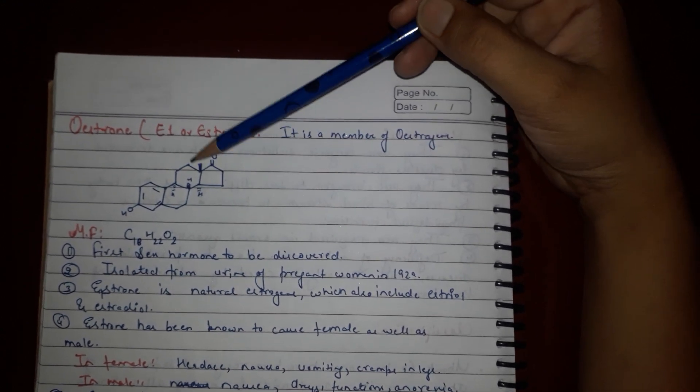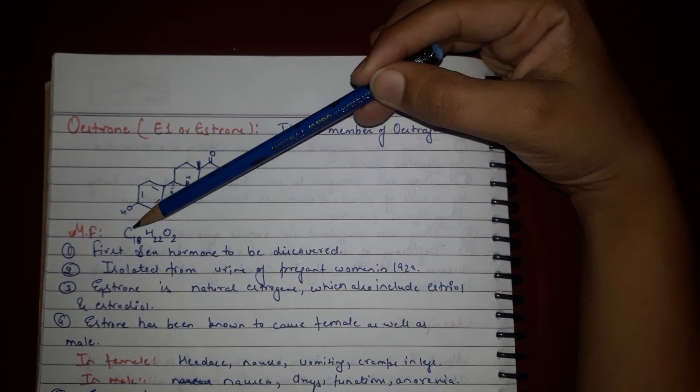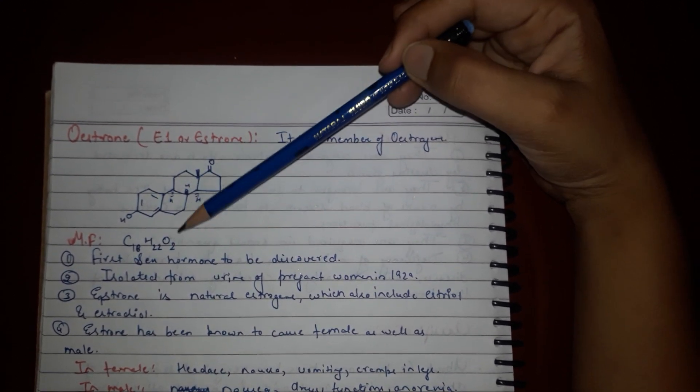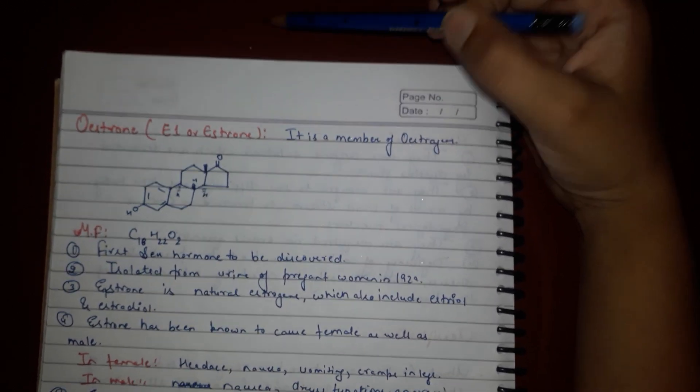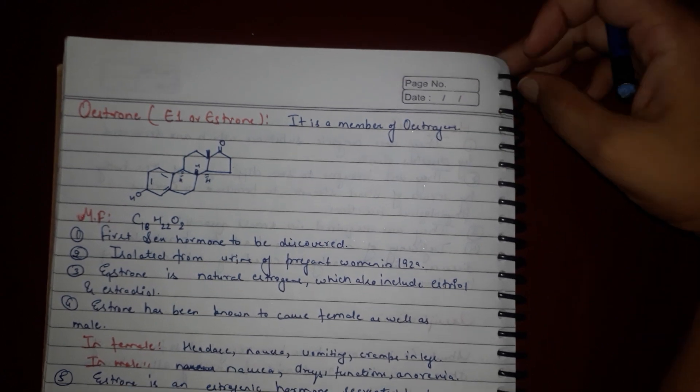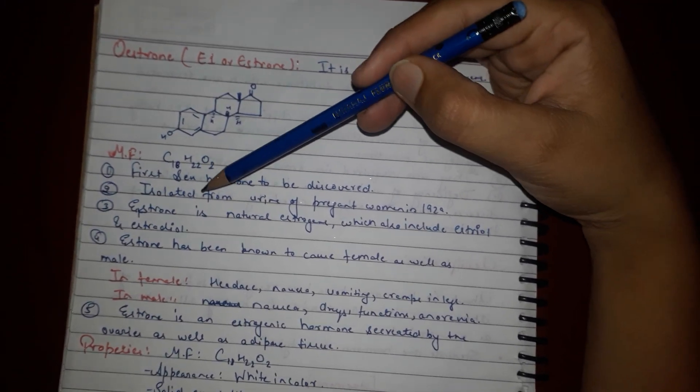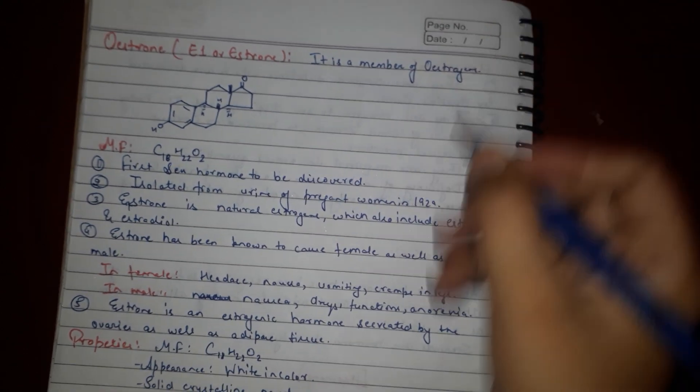Generally for constitution we will discuss these points of estrogen structure. First, molecular formula: C18H22O2, one oxygen is keto and one is OH. Estrogen was the first sex hormone which was discovered. It was isolated from urine of pregnant women in 1929.